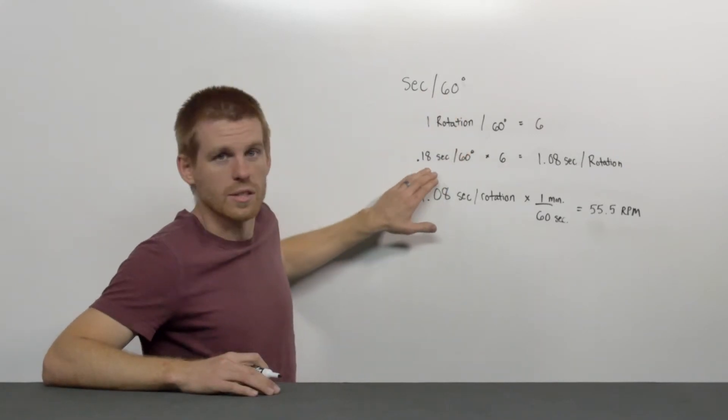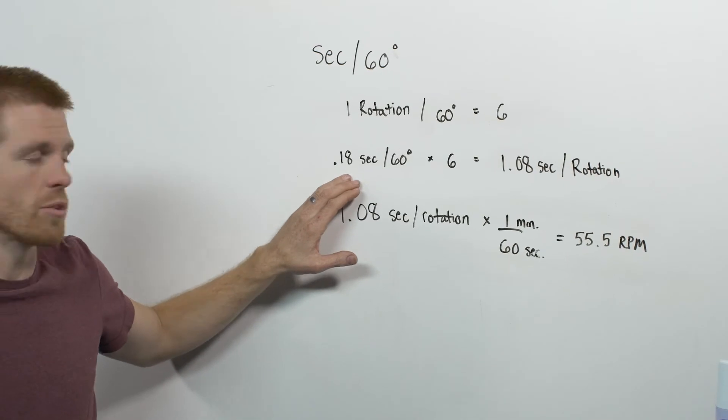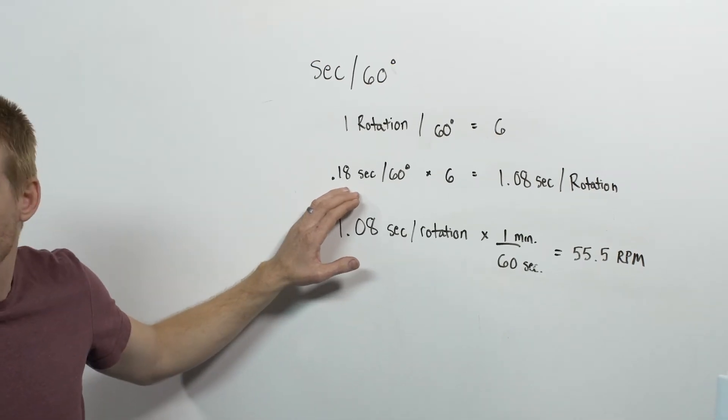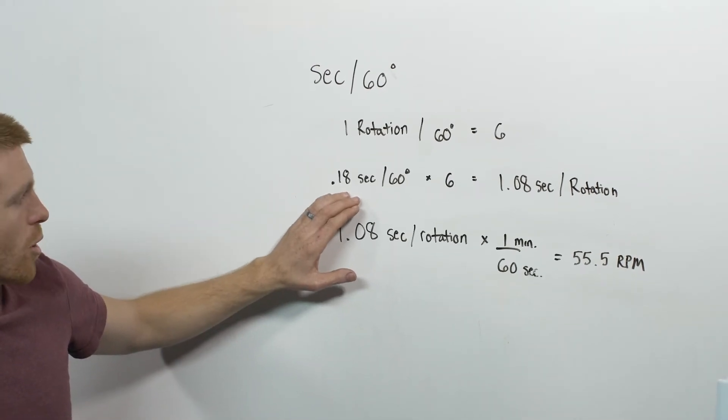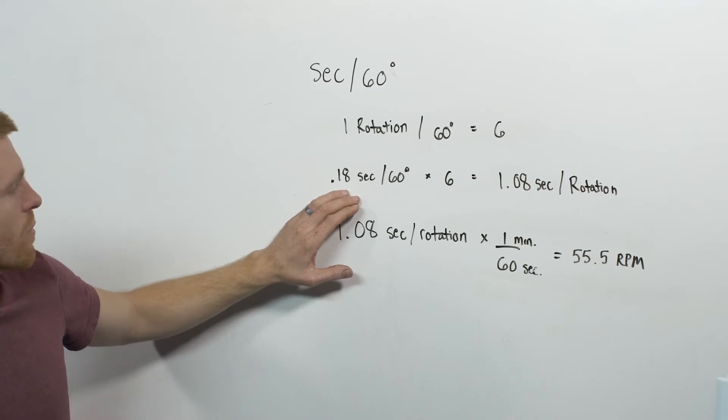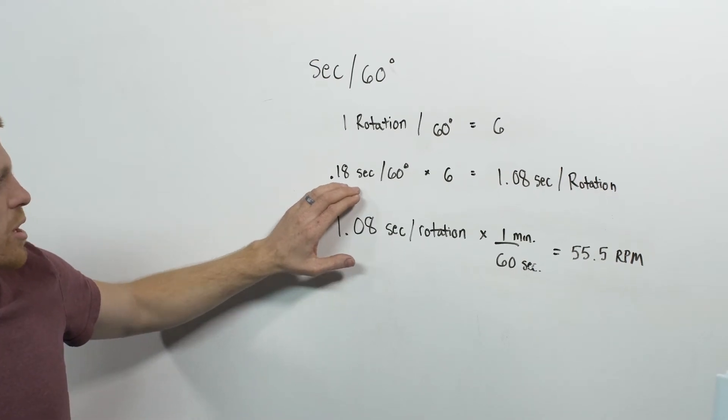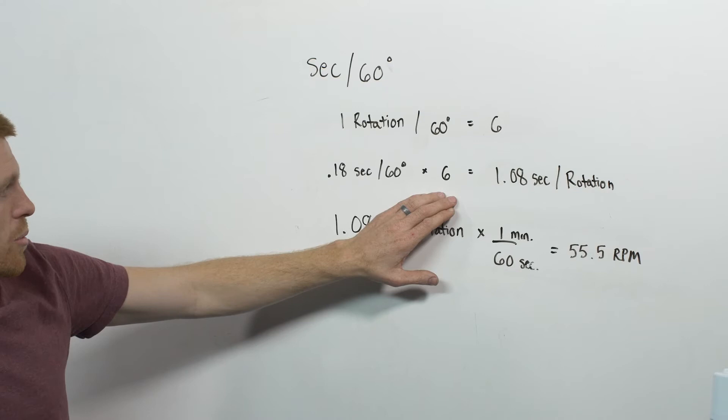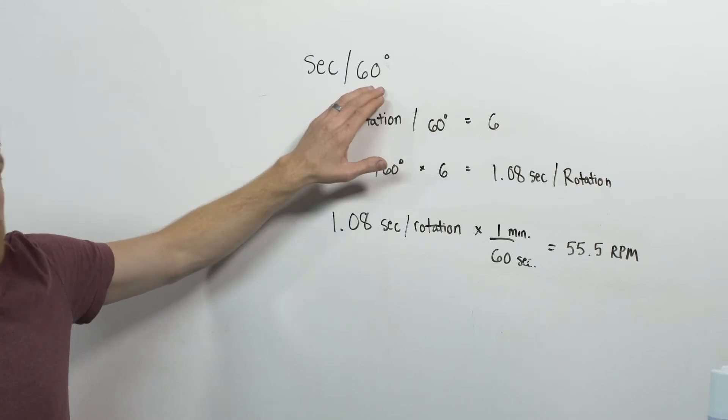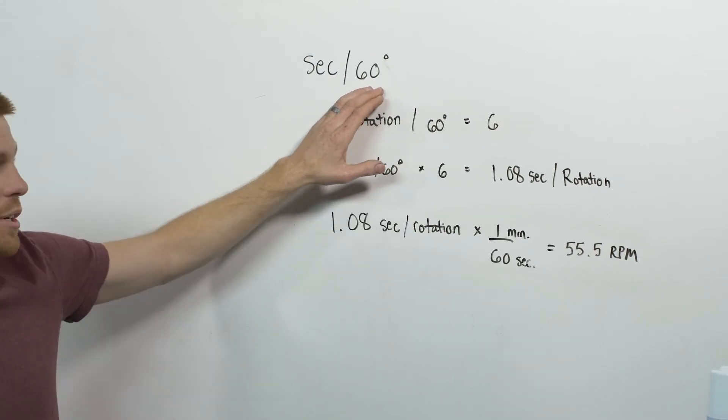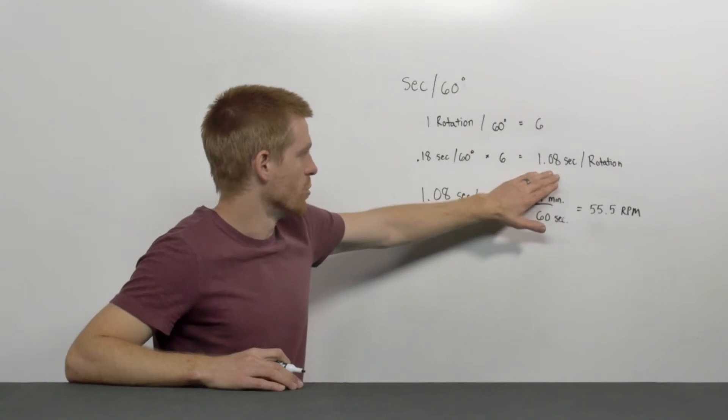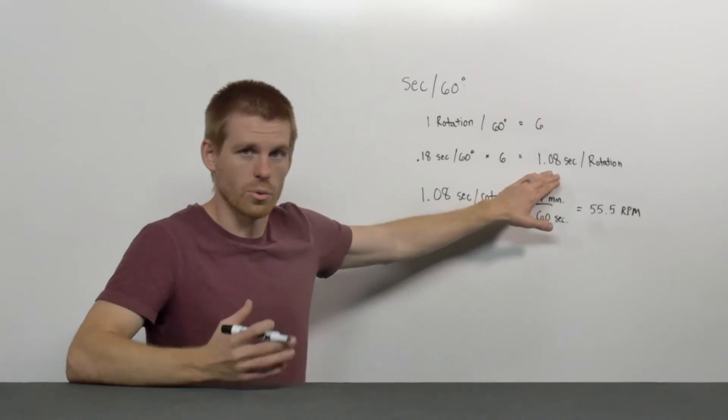I've taken the specs on the 485 HP servo, which rotates 0.18 seconds per 60 degrees for our math example here. And if you multiply 0.18 times six in order to get the sixth of a rotation into a full rotation, the servo would move 1.08 seconds per rotation.